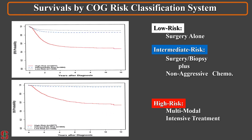This slide gives you event-free survival and overall survival of patients in the low, intermediate, and high risk groups. Very good survival rates are expected by surgery alone for patients in the low risk group, and surgery or biopsy with non-aggressive chemotherapy for patients in the intermediate risk group. However, prognosis for patients in the high risk group is still not great, despite multimodal intensive treatment.